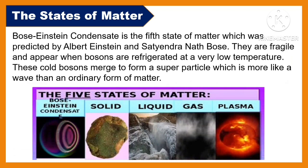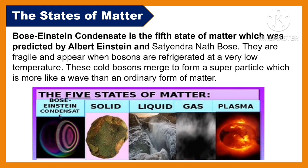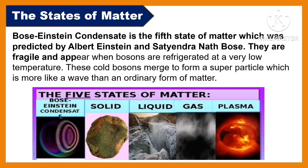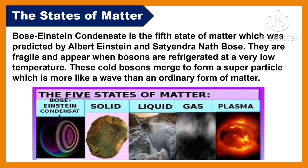Bose-Einstein condensate is the fifth state of matter, predicted by Albert Einstein and Satyendra Nath Bose. They are fragile and appear when bosons are refrigerated at a very low temperature. These cold bosons merge to form a super particle which is more like a wave than an ordinary form of matter.